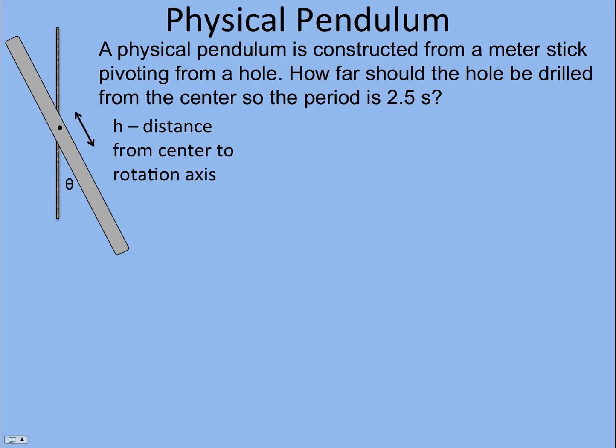And so, again, we're making a physical pendulum out of a rod, but a physical pendulum could be anything, even you if you hold really still. So anything that's pivoting back and forth is a physical pendulum.